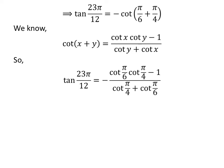Applying the cotangent addition identity gives us tangent of 23 times pi upon 12 is equal to minus of cotangent of pi upon 6 times cotangent of pi upon 4 minus 1, upon cotangent of pi upon 4 plus cotangent of pi upon 6. We know cotangent of pi upon 6 is equal to square root of 3, and cotangent of pi upon 4 is equal to 1. So we plug in these values.